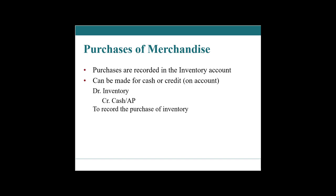You might also receive purchase discounts, return some items, or get allowances — all of which reduce the amount you pay and therefore reduce the cost of inventory. We record all of these as net: we include expenses like freight and non-refundable taxes, and we subtract any purchase returns, allowances, or discounts.